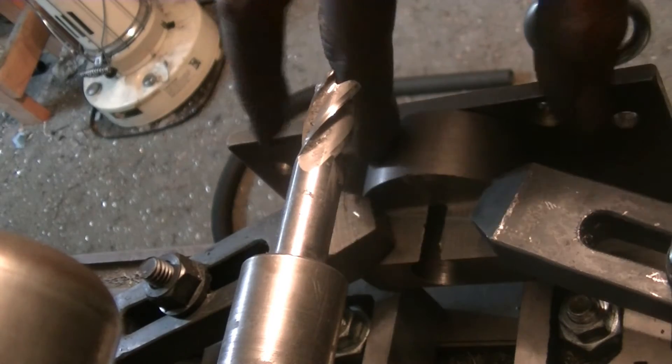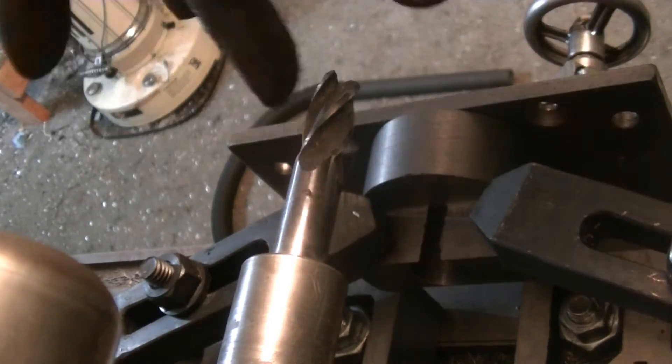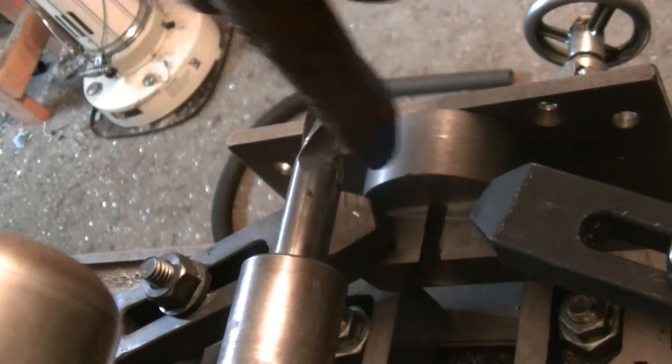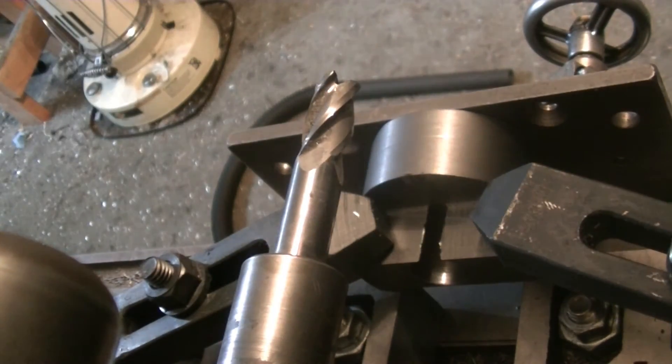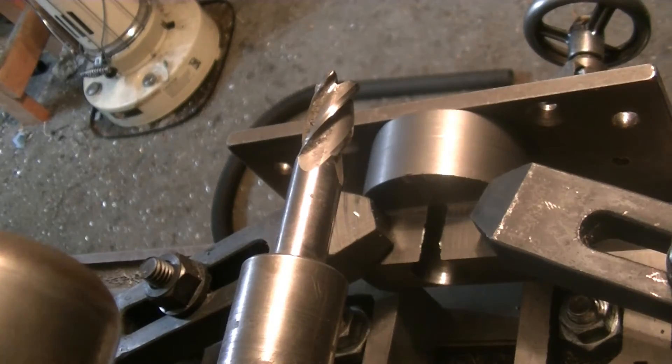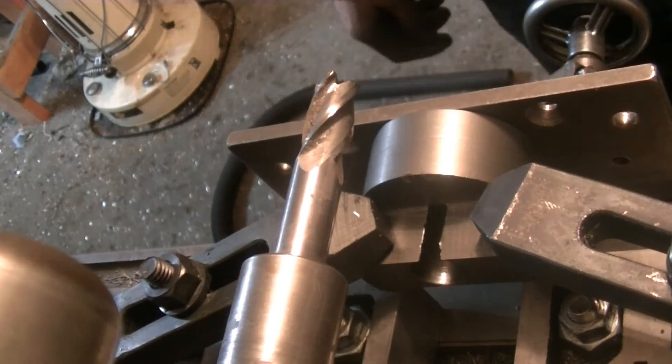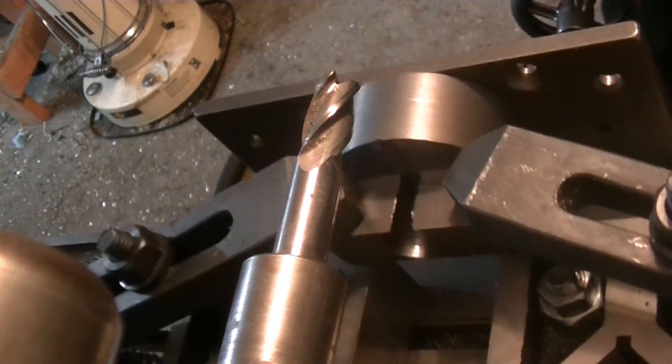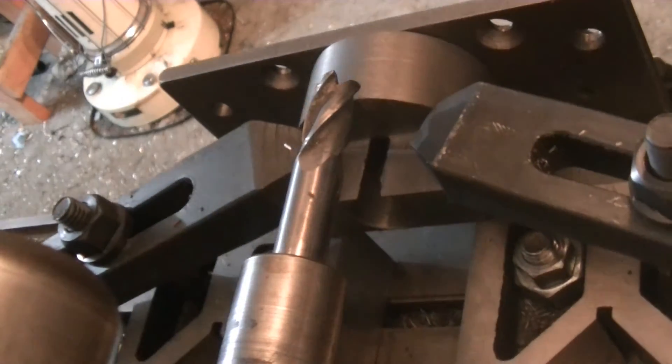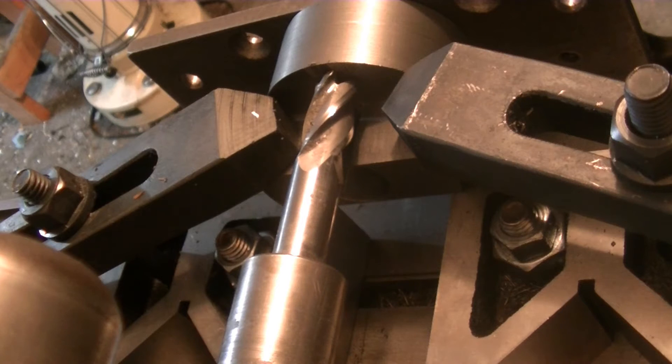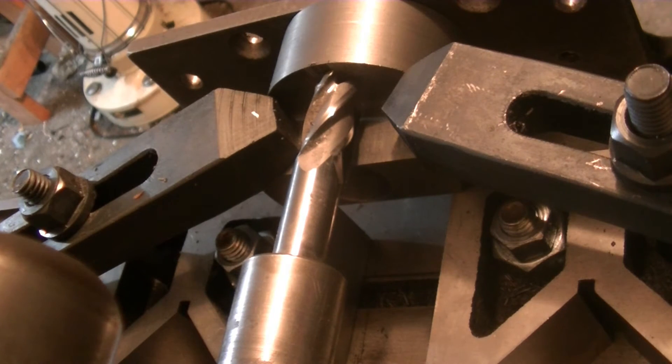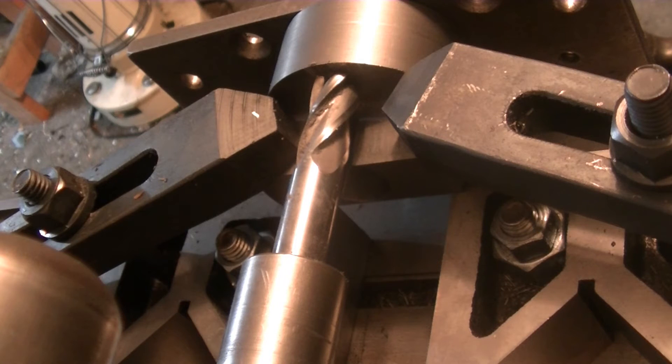We got two toe clamps holding down the flat parts, and then we have this guy up against the front. The only things holding this thing down are the toe clamps, because we need to be able to have the end mill go through the center.